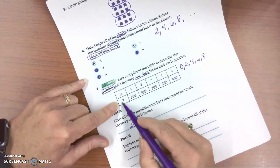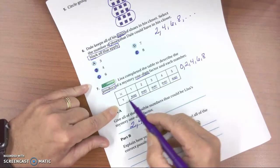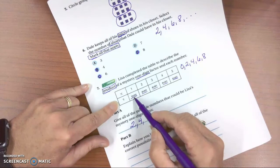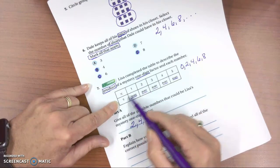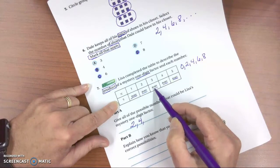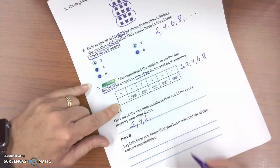What about 5? 5 times 1 is 5. That's odd, that won't work. Let's try 6. 6 times 1 is 6, that's even. 6 times 2 is 12, that's even. 6 times 3 is 18, that's even. 6 times 4 is 24, that's even. 6 times 5 is 30. So we have that one.